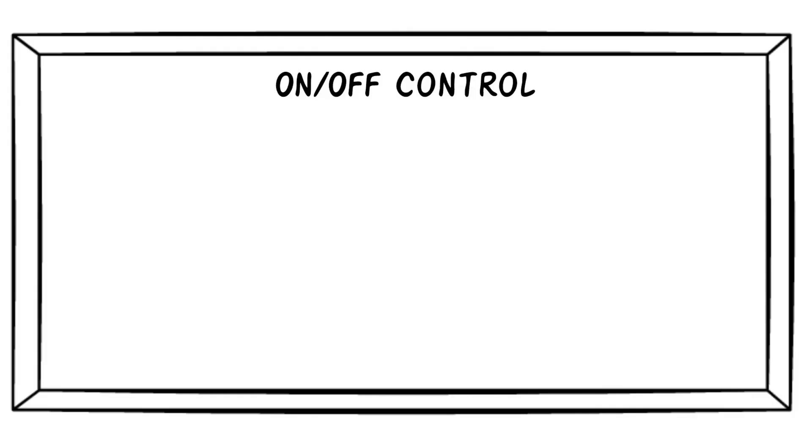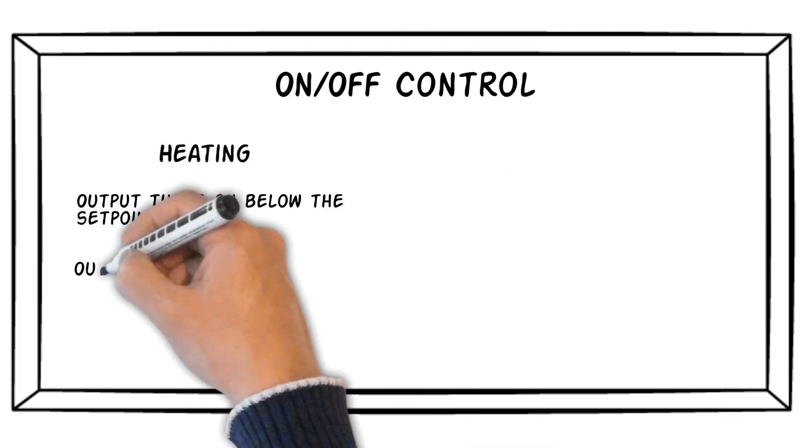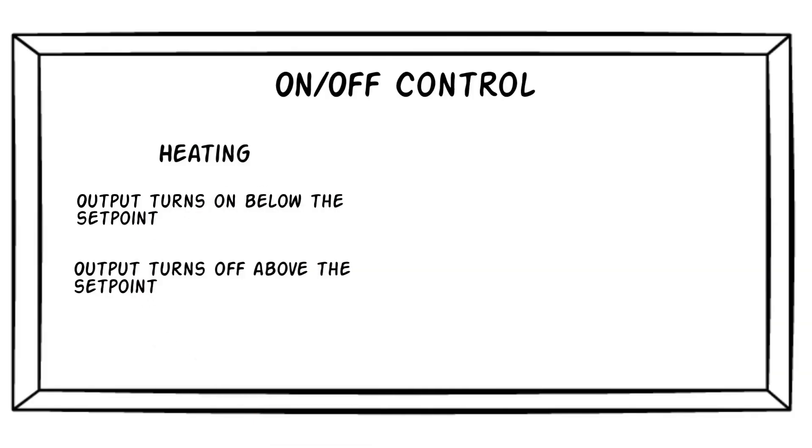When using on-off control in a heating application, the output turns on below the set point and turns off above the set point. This means if the output is connected to a heater, the heater will turn on when the temperature is below the set point and turn off when the temperature is above the set point. This is referred to as indirect acting control.